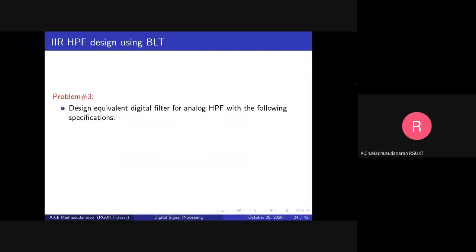Good morning. Today we are going to discuss IIR high pass filter design using bilinear transformation and IIR band pass filter design using bilinear transformation. Let's consider the problem: design an equivalent digital filter for an analog high pass filter with the following specifications — passband cutoff frequency in radians per second, minimum required passband gain, stopband cutoff frequency in radians per second, maximum allowed stopband gain, and sampling rate fs samples per second.